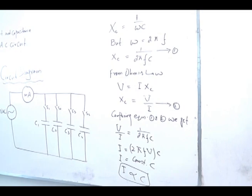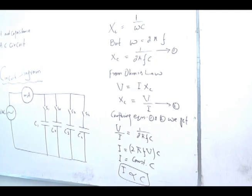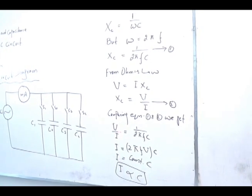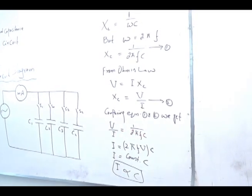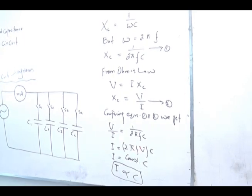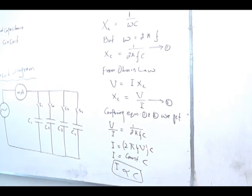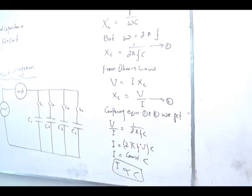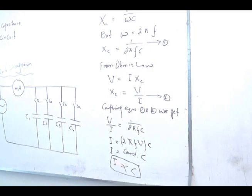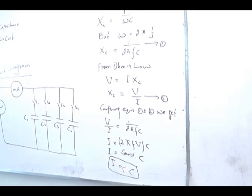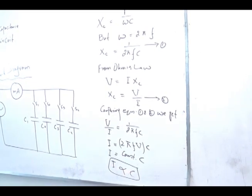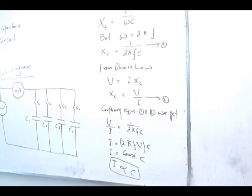From Ohm's law, V equals I times XC, so XC equals V over I. Comparing these two equations, we get V over I equals 1 over 2πFC. From here, I equals 2πF times V times C. Since voltage V and frequency F are constant factors, I equals constant times C, which means I is directly proportional to C. So the current is directly proportional to capacitance — if capacitance increases, current also increases, and vice versa.